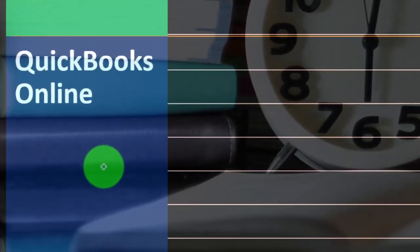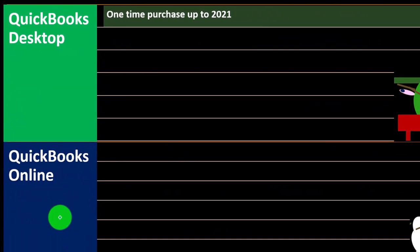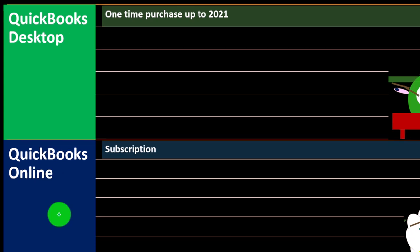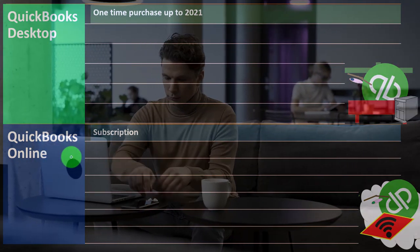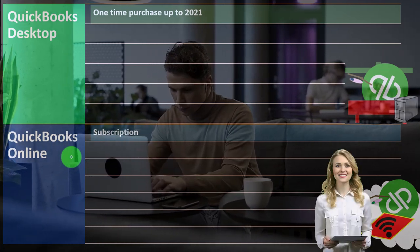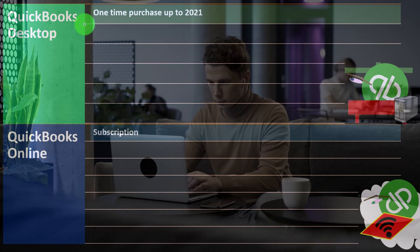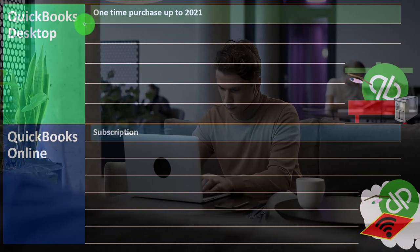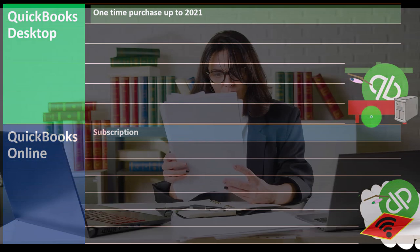QuickBooks Desktop used to be a one-time purchase type of situation up until 2021, but they're now moving to a subscription model. The online version has always been subscription-based - it's web-based, so you need internet to work with it. Everything at this point seems to be going toward a subscription model. Even the desktop version is moving in that direction, though there are pros and cons to that.